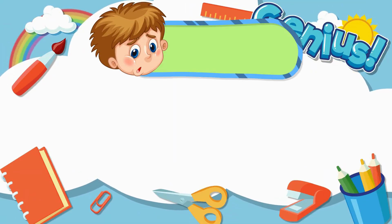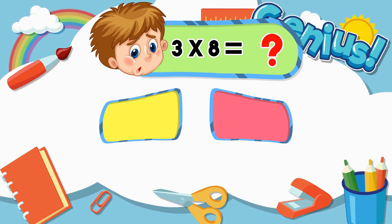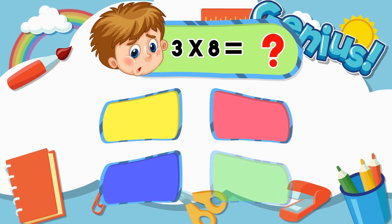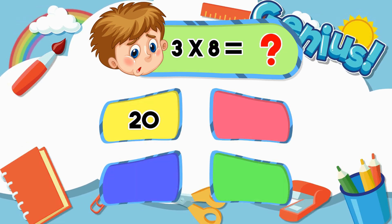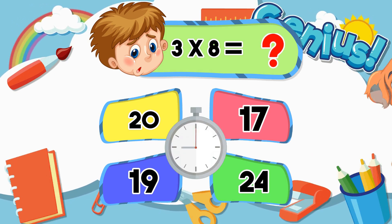What is 3 times 8? 20, 17, 19, 24. The answer is 24.